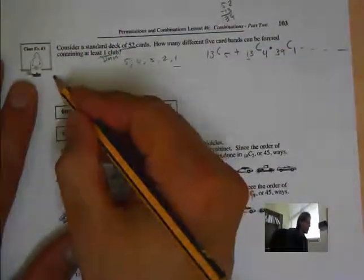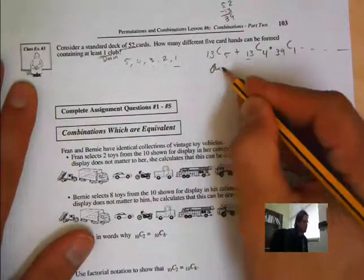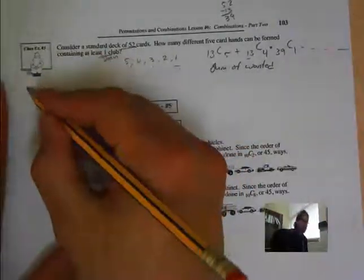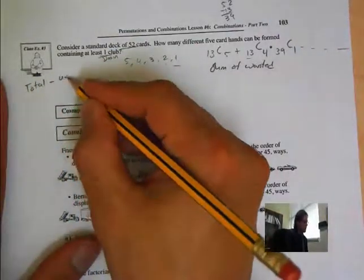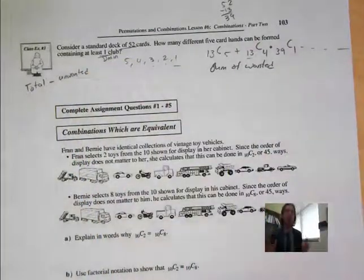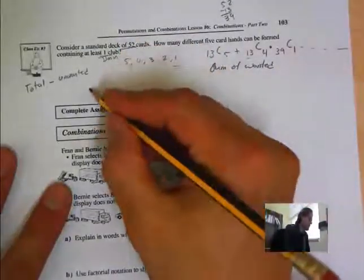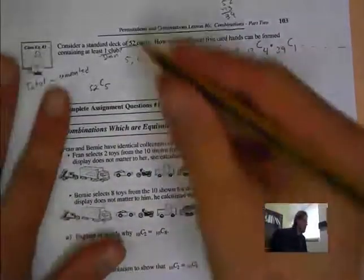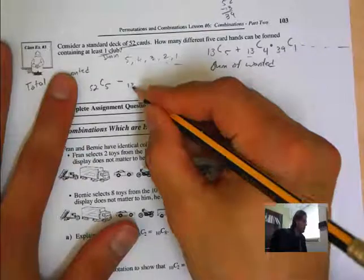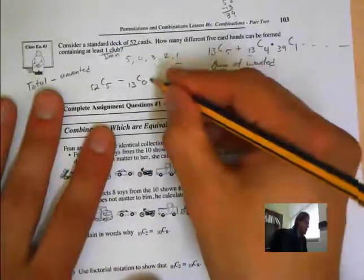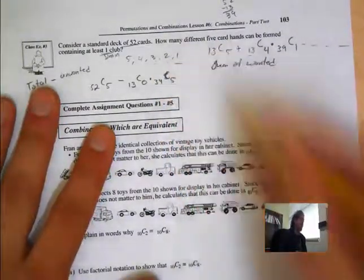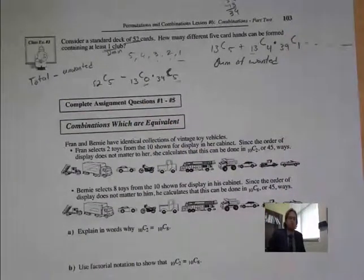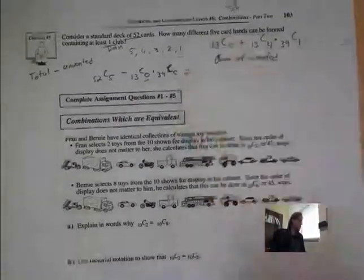The shortcut is: instead of summing all wanted cases, we do Total minus Unwanted. The total is 52C5 — all possible 5-card hands. What is the one thing we cannot have? No clubs. So we subtract: 13C0 × 39C5 — that's 5 cards with none being clubs. Everything else we could have. So 52C5 minus 39C5 gives our answer. Very nice, simple, a lot faster.